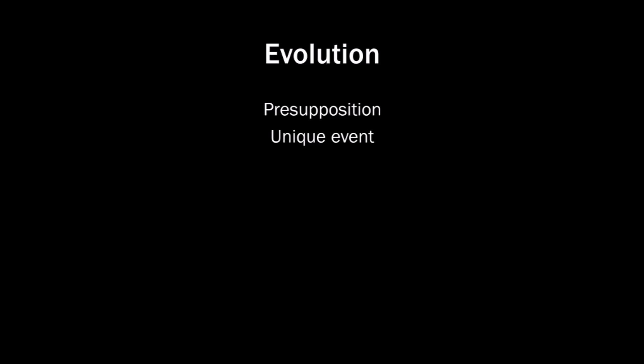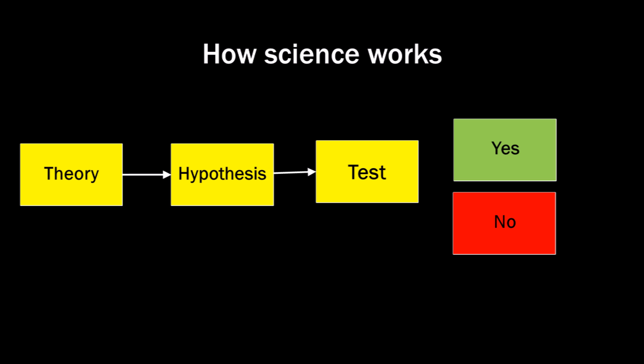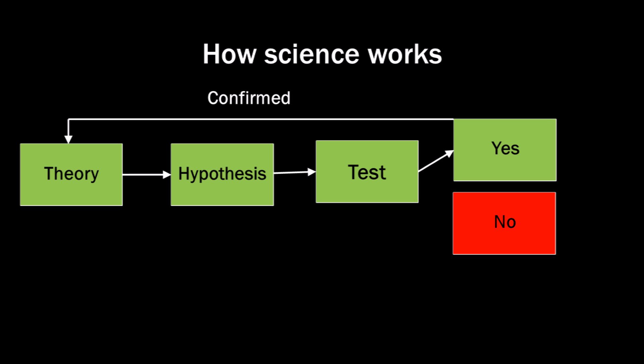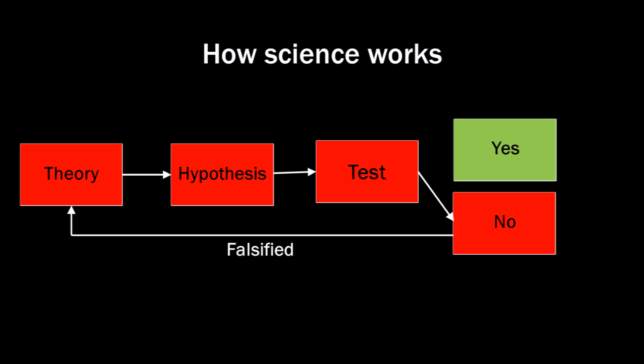Is evolution falsifiable? How does science work? You form a theory, set up a hypothesis, then test it. If the test confirms the hypothesis, it supports the theory and shows some explanatory power. If the test rejects the hypothesis, the theory is false. That's how to falsify a theory.